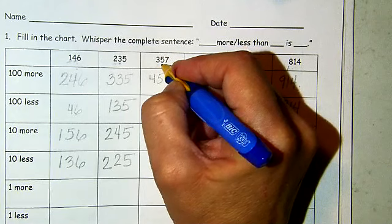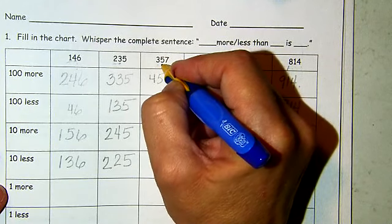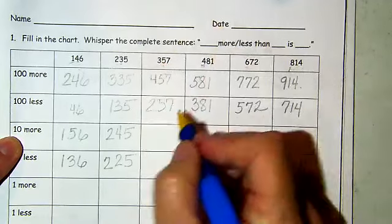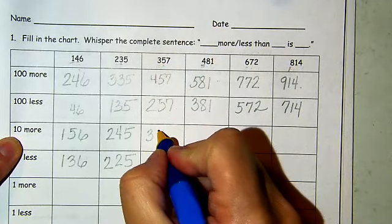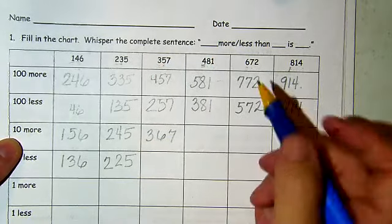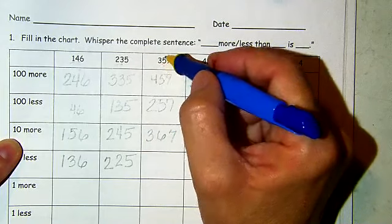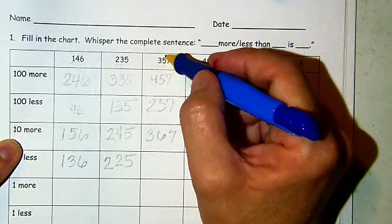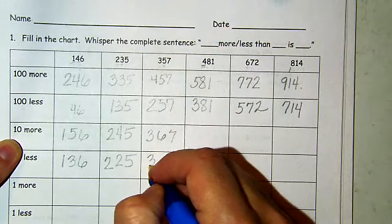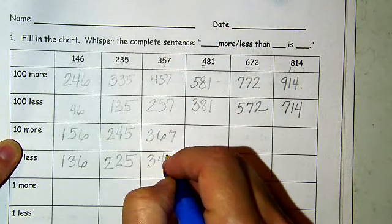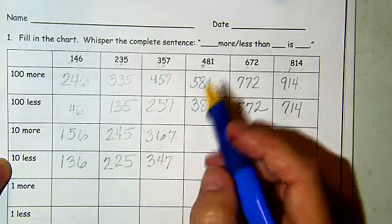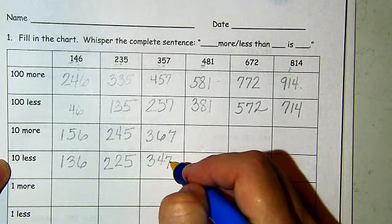357 — we have the digit five in the tens place, so we have five tens. One more 10 would be six — we're going to still have 300, now we're going to have six tens and seven ones: 367. One 10 less — take one 10 away from five tens and that digit's going to be a four. We're going to have 347. 10 less than 357 is 347.